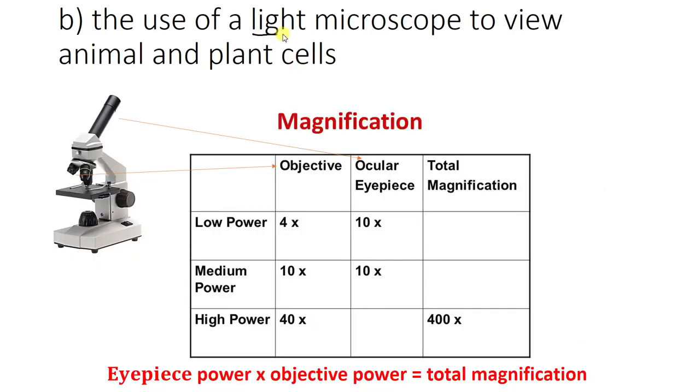So what we might use is something called a light microscope. You might have used these in school, it's this thing over here. You have usually this eyepiece that you look down, you put your specimen on the stage here, you clip it down and then you look under the microscope and you might have to use the focusing knob to try and get it in focus. And you can actually see these things in the microscopes.